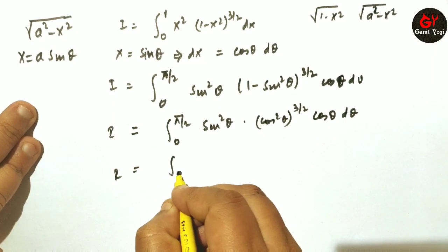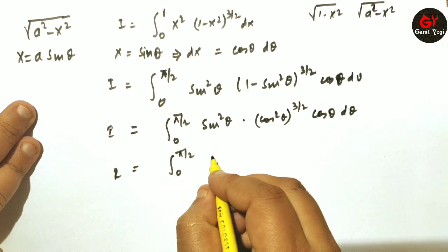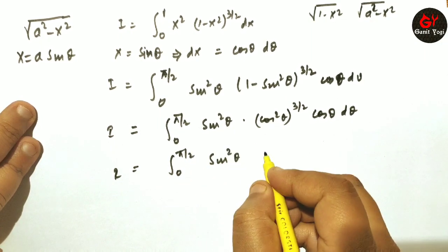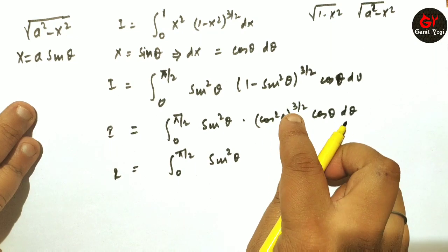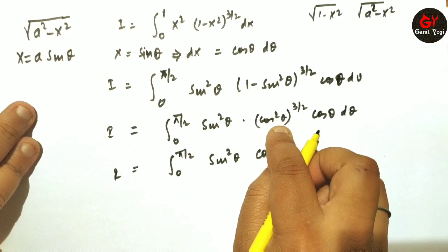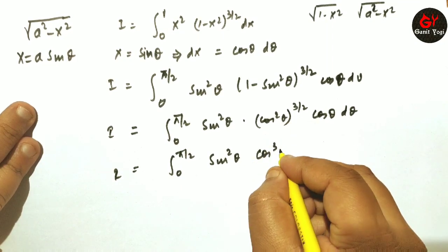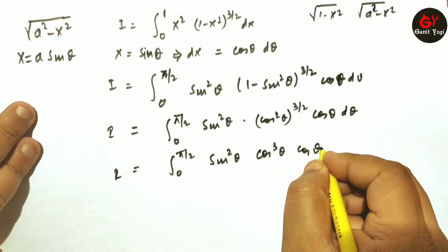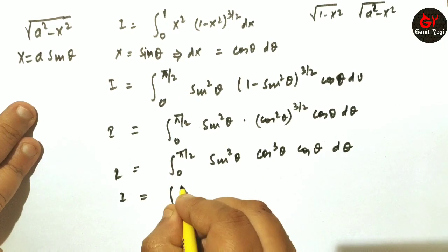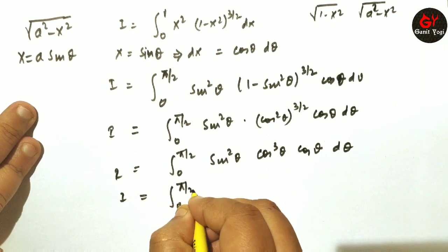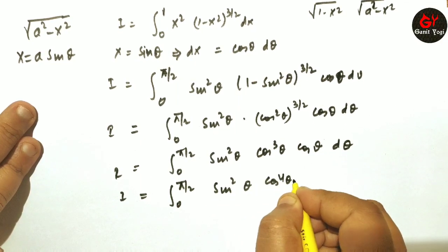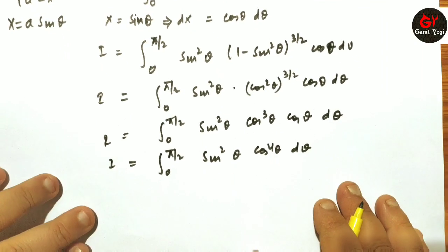So I equals the integral from 0 to π/2 of sin²θ · cos⁴θ dθ, where the cos³θ and the extra cosθ from dx combine to give cos⁴θ.